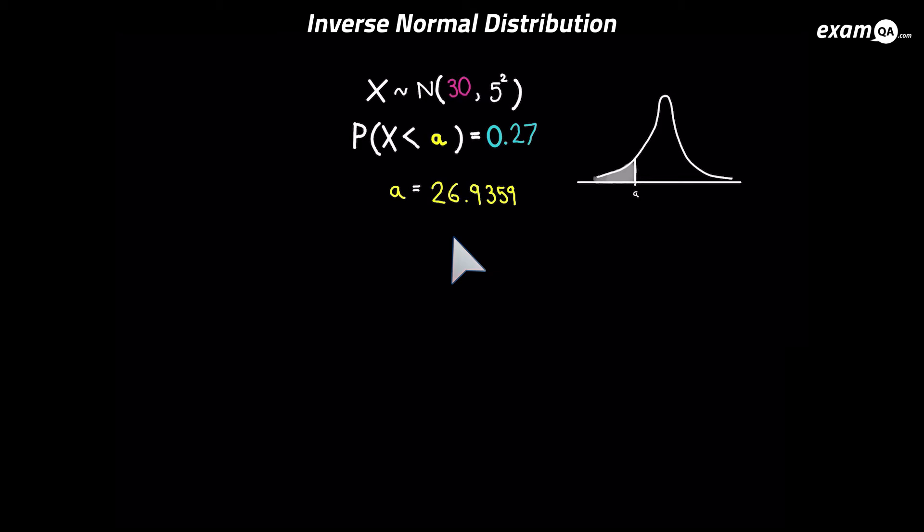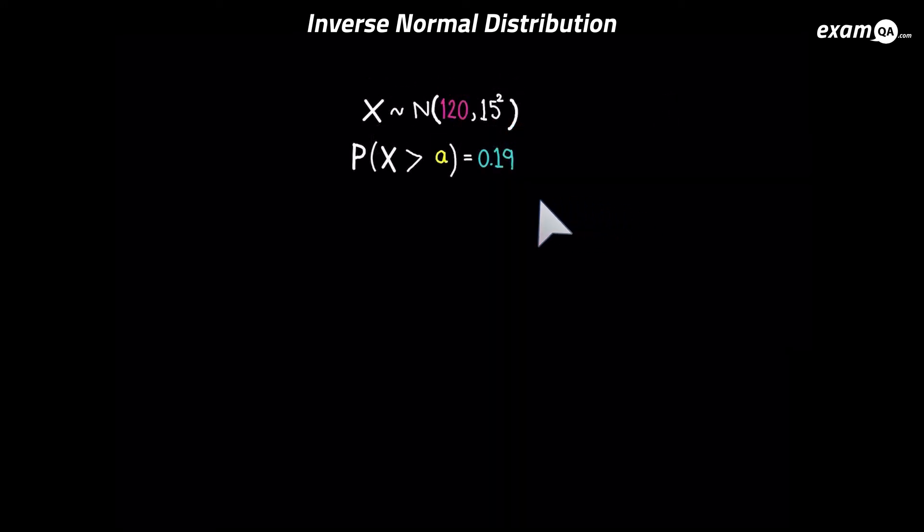And of course, this answer doesn't make sense because you can see the mean is 30, and we knew we were on the left hand side of 30. Okay, so there's something wrong with this question. We can't just be doing the inverse norm as we've been doing. So I'll give you a moment to have a look at it and spot the difference.